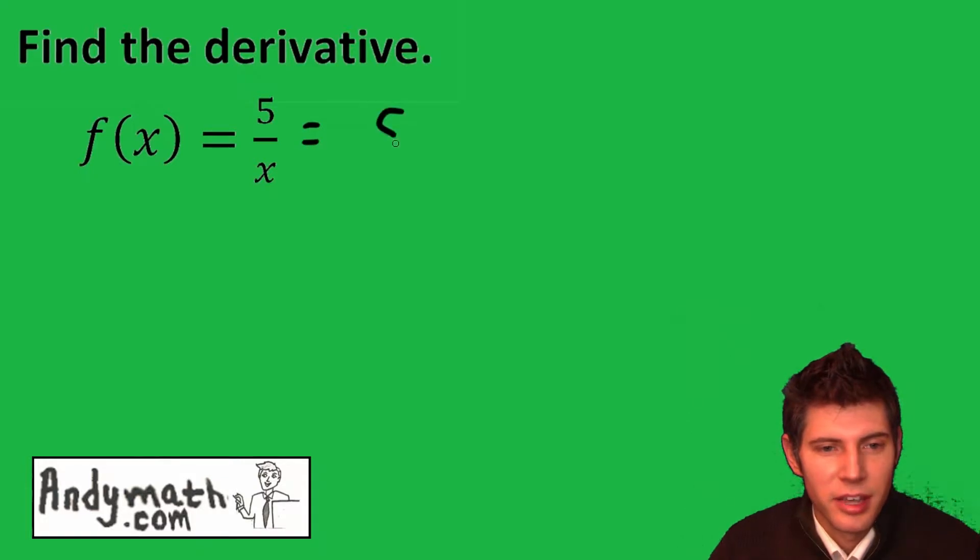First thing I like to do is rewrite this as 5 times x to the negative 1, brings that x up on top.